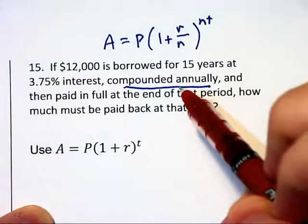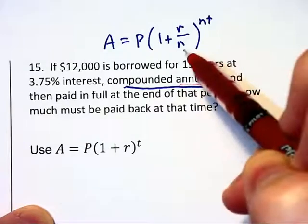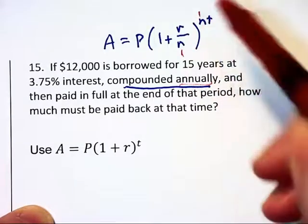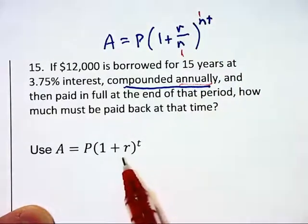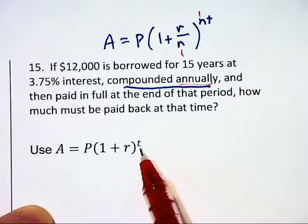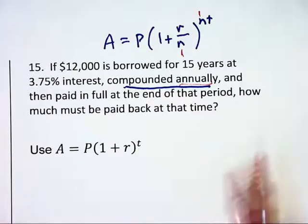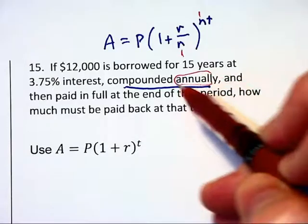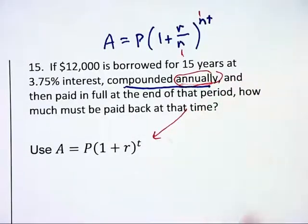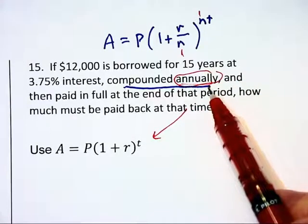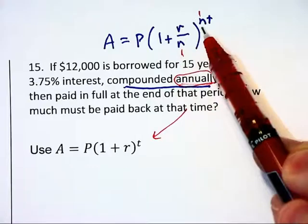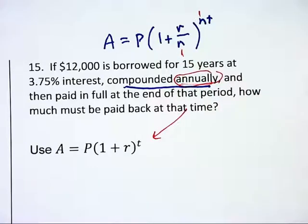But because we are compounding annually, which means once per year, N equals 1 in both of these cases. So this reduces because of that word annually to this formula here. Had this compounded quarterly, N would have equaled 4 and we'd go back to this original equation.